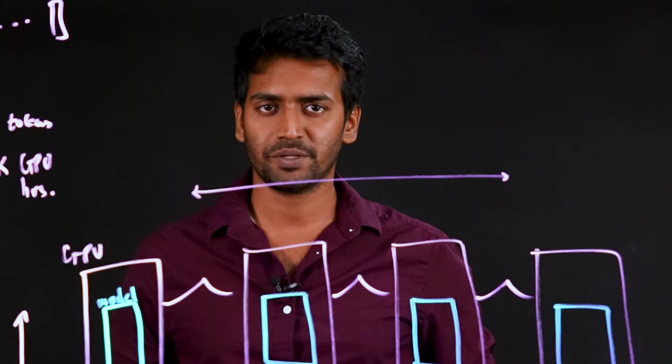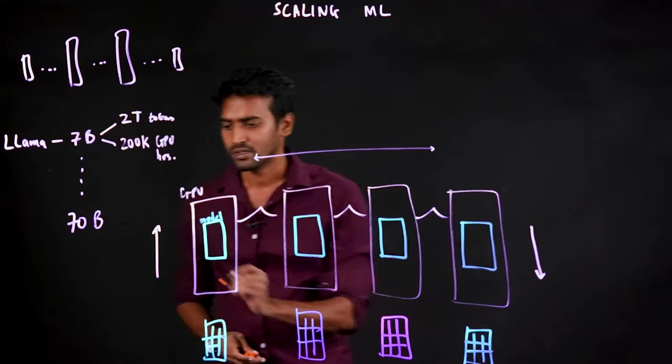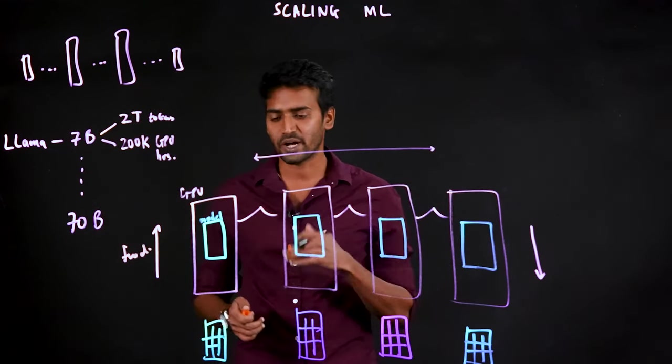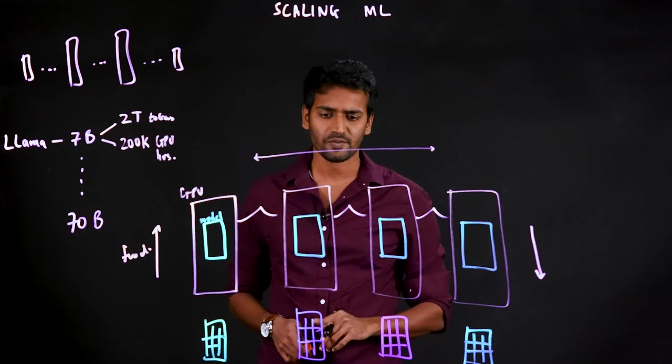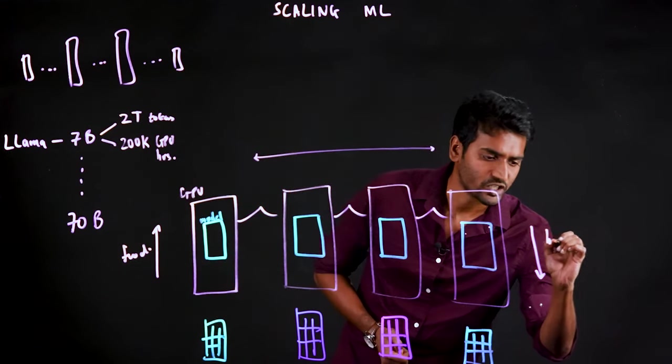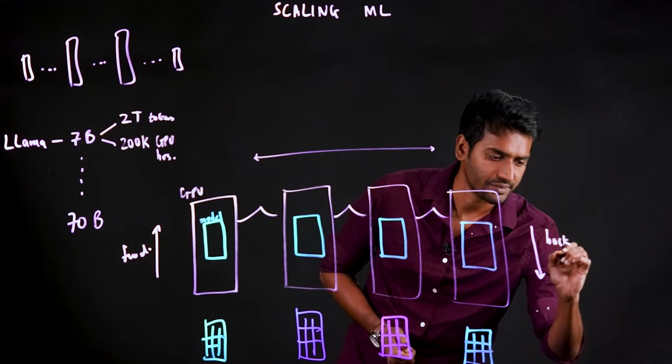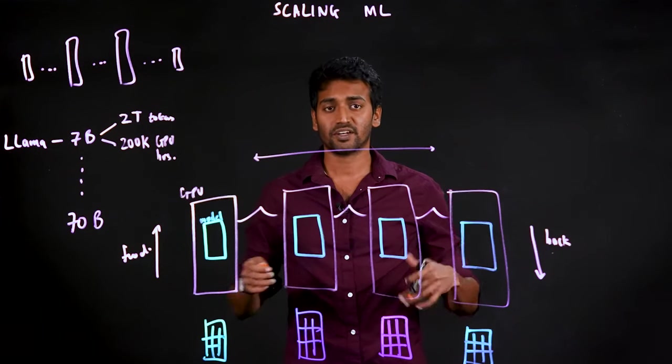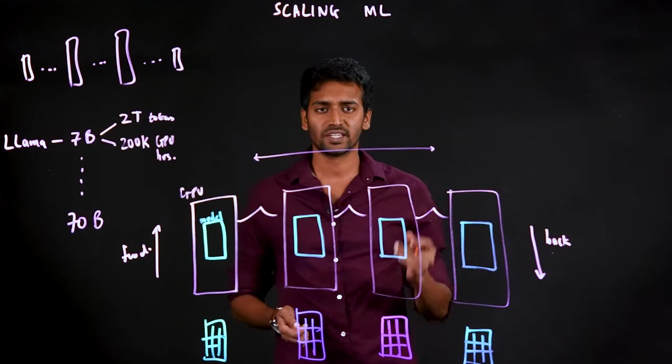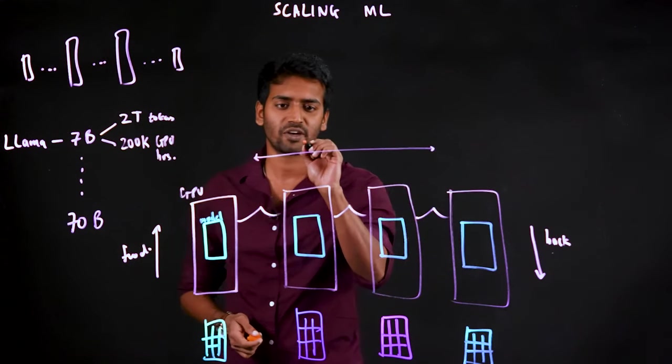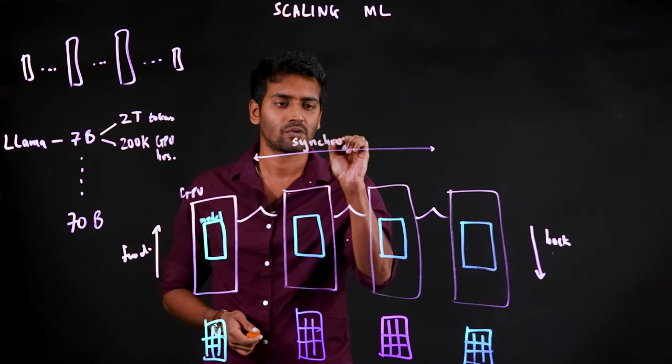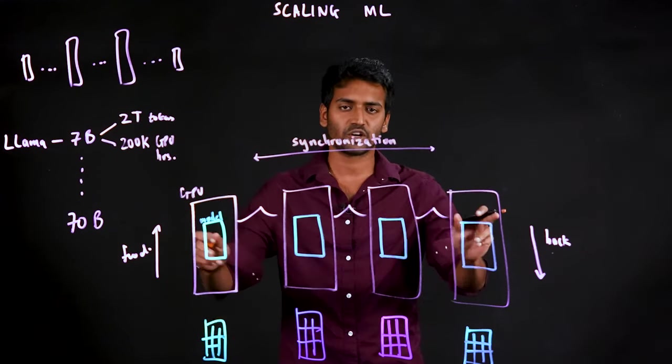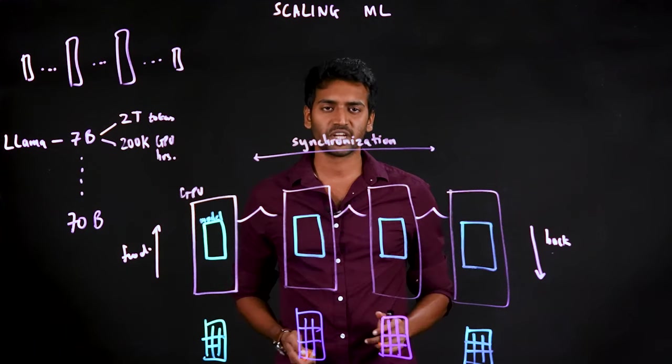When you're training a model with DDP, there are three steps that need to happen. First, the forward pass, where you take the data and pass it through the model, compute the loss, which is then backpropagated through the model, which then gives you the gradients. The third step, where we update the model's weights, is preceded by a synchronization, where all the computed gradients from each of these replicas are communicated with each other.